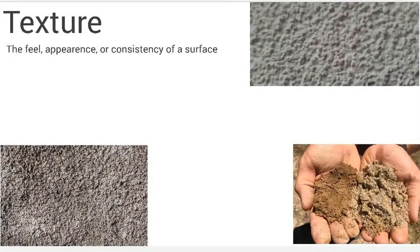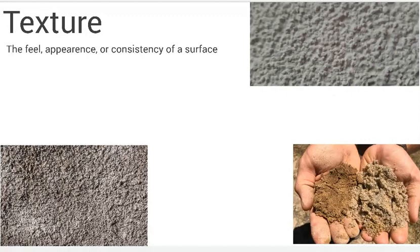Let's move on to our second property of soil, which is texture. Texture is the feel or the appearance or consistency of a surface. When we talk about texture we really think of two things: we can look at the appearance of it — what does it look like? Does it look bumpy? Does it look rough? Does it look smooth? But also when we talk about soil, the important thing is being able to touch and feel it. The appearance of the soil for texture is one thing, but also getting your hands a little bit dirty, like we see in the bottom right picture, is important as well.